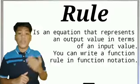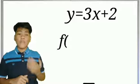The fourth and the last way is the rule. A rule is a relation can be written in the form of equations. Like for instance, y is equal to 3x plus 2, and f(x) is equal to 3x plus 2, and the last example is f(1) is equal to 3(1) plus 2.